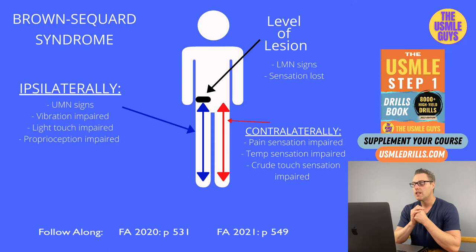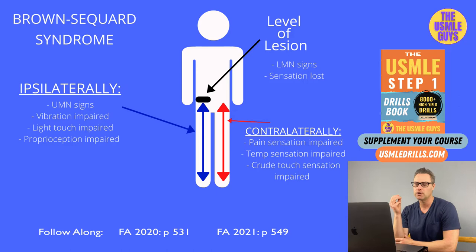One important nugget: if a lesion occurs above T1, Horner syndrome might occur. If we get a lesion above T1, be on the lookout for ptosis, anhidrosis, and miosis — the classic findings associated with Horner syndrome.